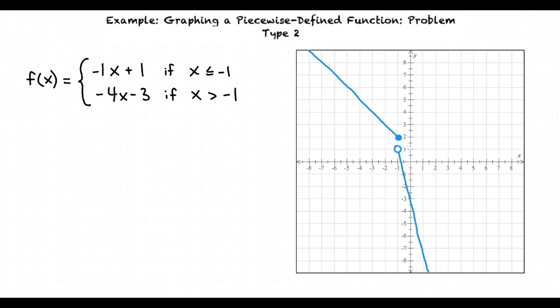Now that we have our piecewise defined function graphed, we need to determine if the function is continuous. We can see that the two portions of the function do not come together at a point, so our function is not continuous.